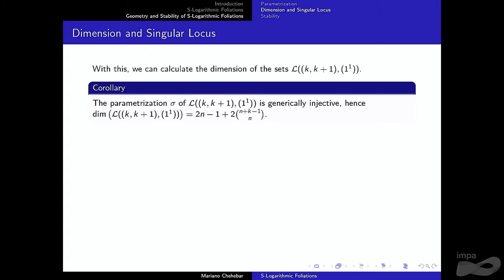One extra thing worth noting: the exceptional component has a special rigidity property — you get one differential one-form and act by coordinate changes to obtain all other elements. This computation shows that is not the case in general, because the dimension grows really fast. So you cannot obtain all S-logarithmic foliations only by acting with coordinate changes.